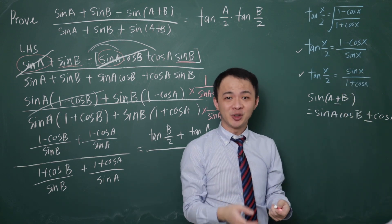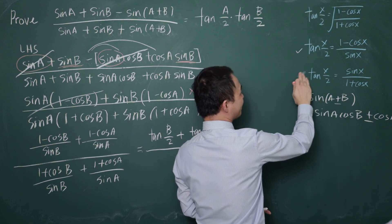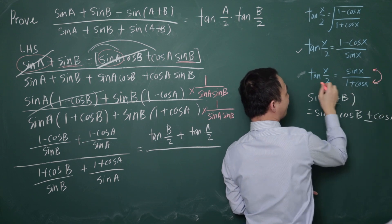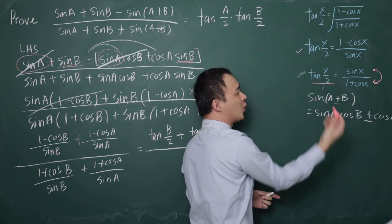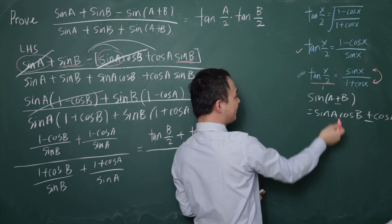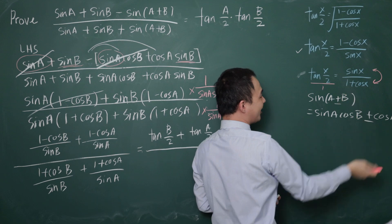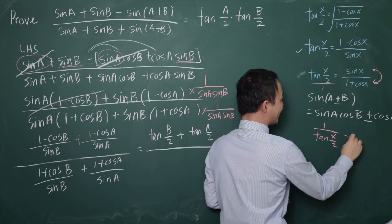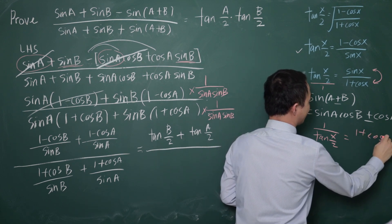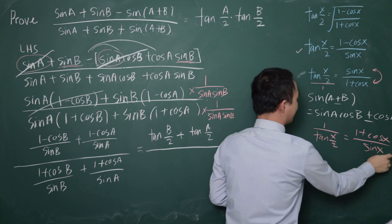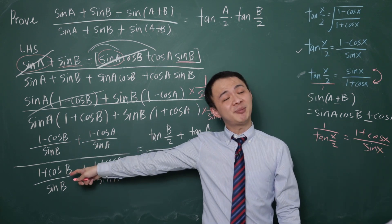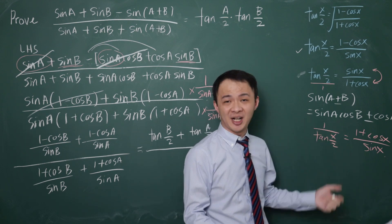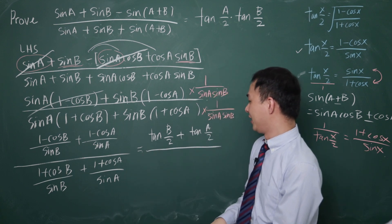Because the denominator terms are the reciprocal of sin x/(1 plus cos x), I can write them as 1 over tan(x/2). So the denominator becomes 1/tan(B/2) plus 1/tan(A/2). This is what I want to do for the denominator.